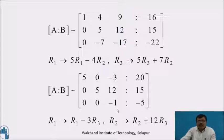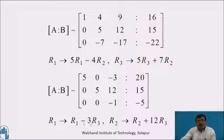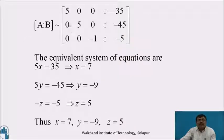Now use the third element −1 to make the third element of the first row and the third element of the second row become 0. Apply R1 = R1 − 3·R3, R2 = R2 + 12·R3. The matrix AB becomes equivalent to [5, 0, 0, 35; 0, 5, 0, −45; 0, 0, −1, −5].